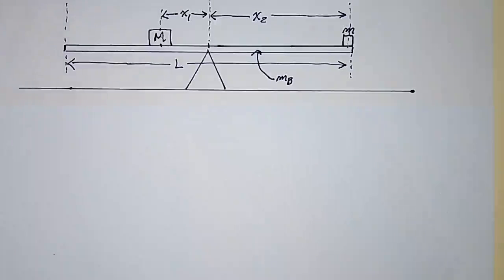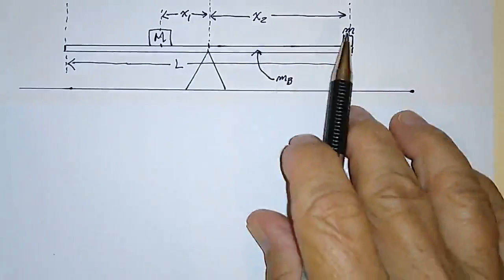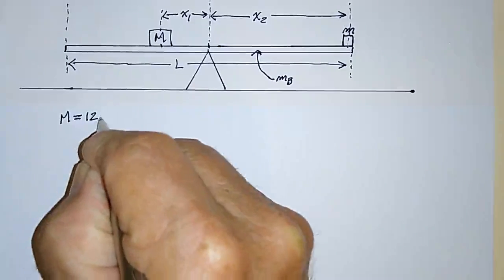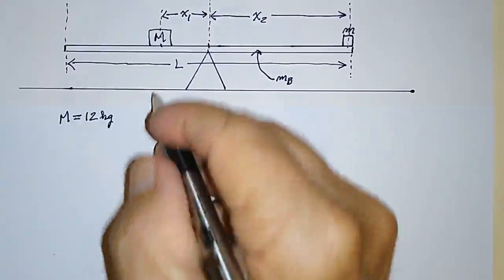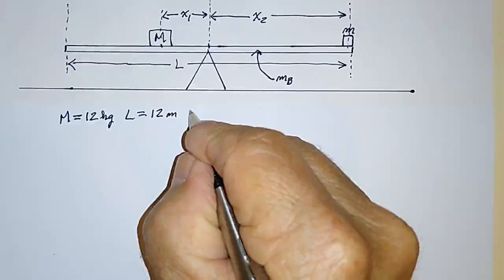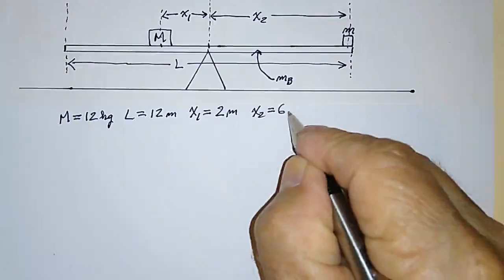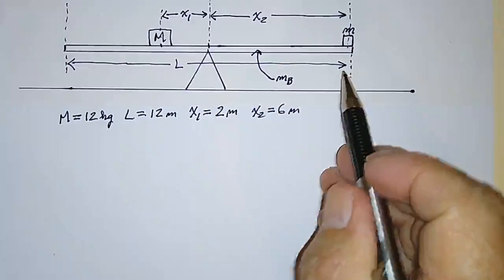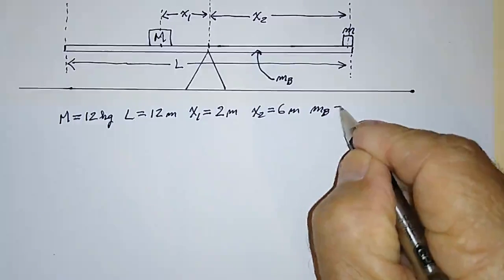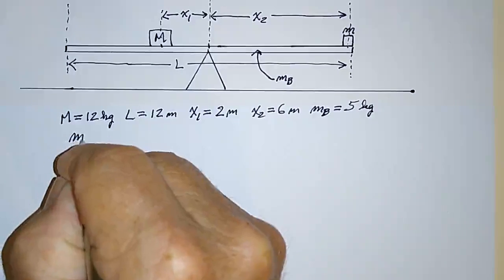An example of the kind of problem you might expect: given everything except little m, what is that little mass? Let's say big M equals 12 kilograms, L equals 12 meters, x1 equals 2 meters, x2 equals 6 meters — which is half the total length L of 12. And let's say the mass of the board or seesaw is 5 kilograms. So what we want to find is little m.